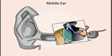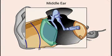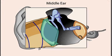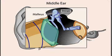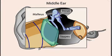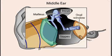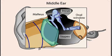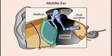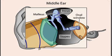From the ear canal, sound waves vibrate the eardrum, which in turn vibrates the three tiny bones in the middle ear: the malleus, incus, and stapes. The stapes vibrates a small membrane at the base of the cochlea called the oval window, which transmits the amplified vibrational energy to the fluids present in the cochlea.